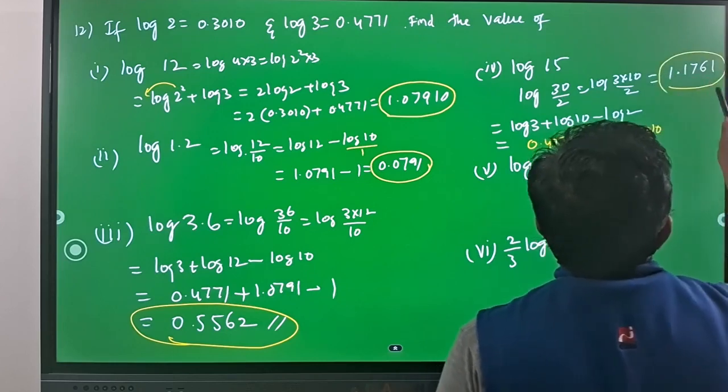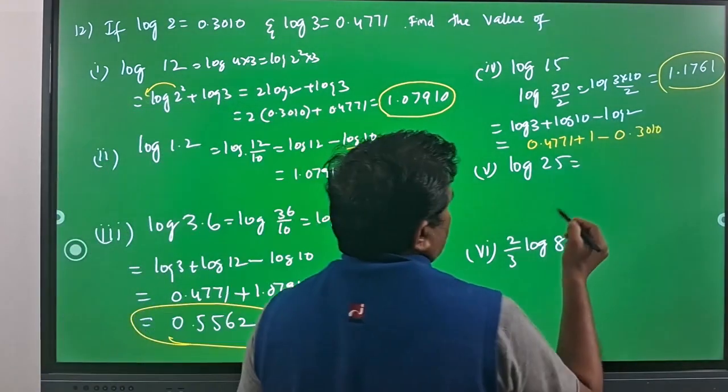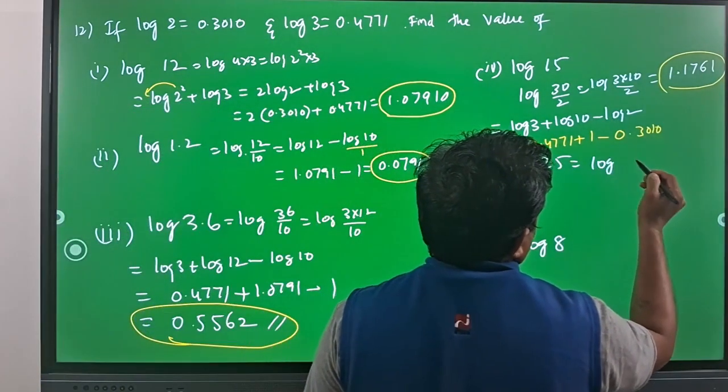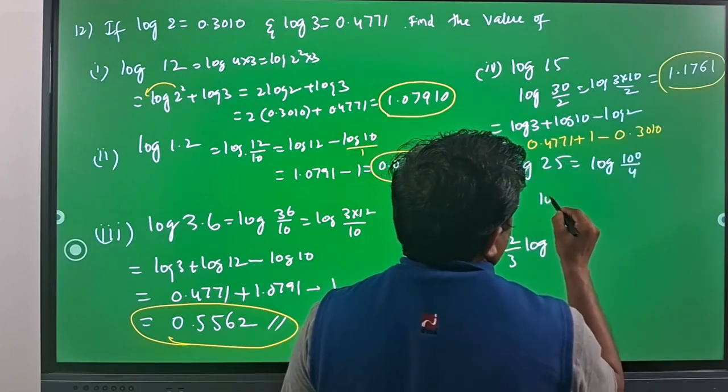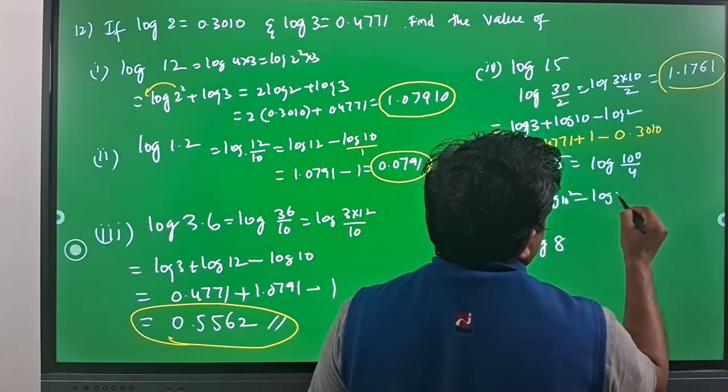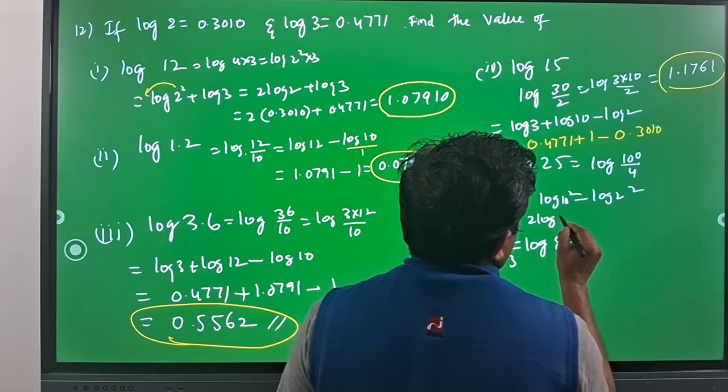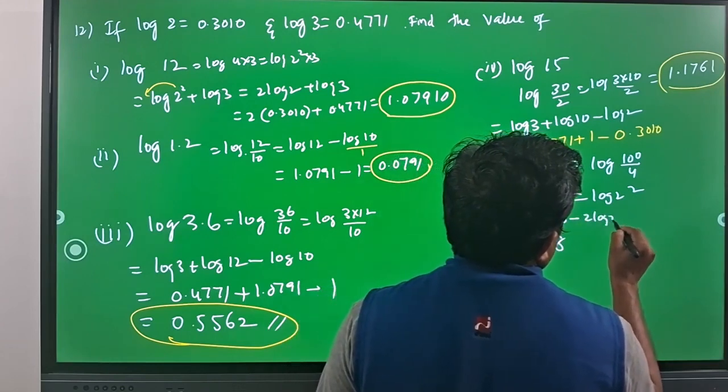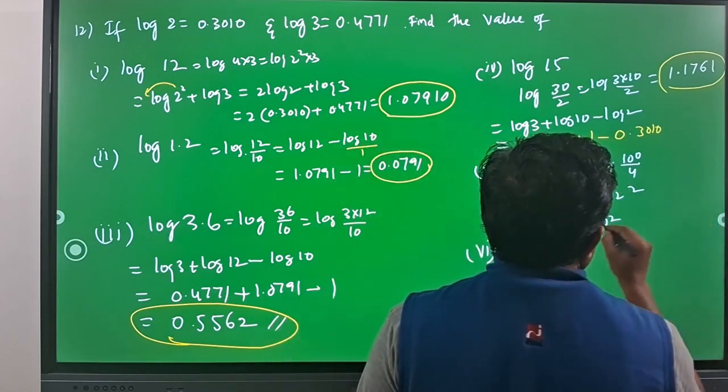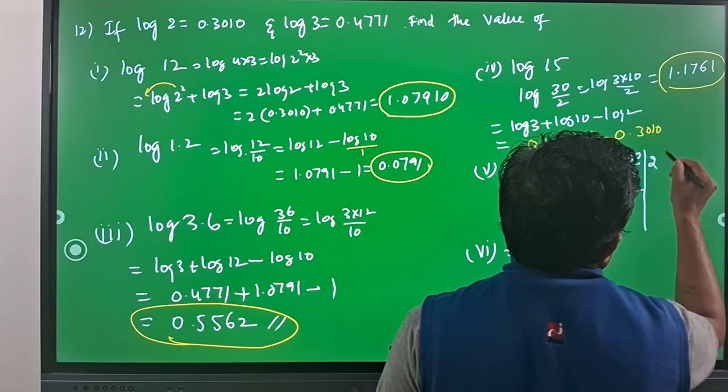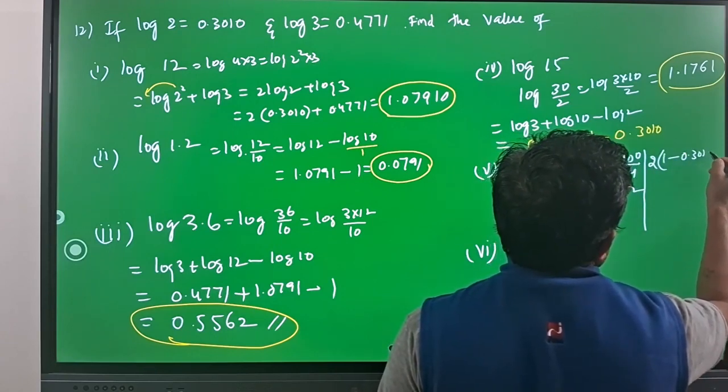You can check the summation by pausing the video. Log 25 I can write as log 100 by 4, which is equal to log 10 square minus log 2 square. This can be written as 2 log 10 minus 2 log 2, so you have 2 as common.